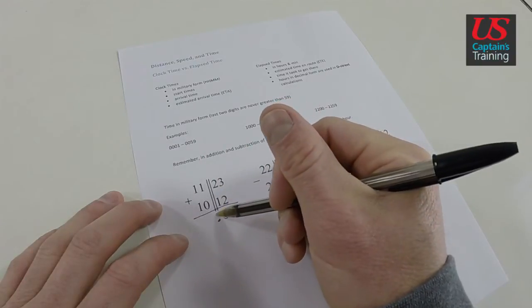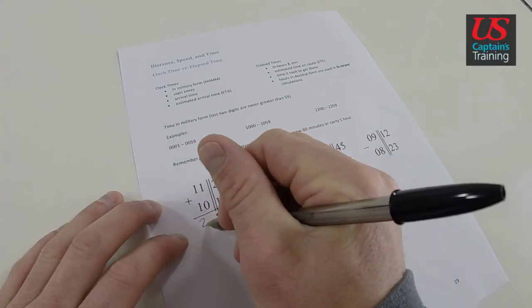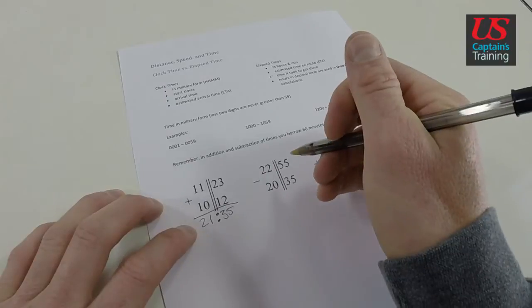Usually when we do time, we use these colons. And now 11 plus 10 is 21. Nice, clean, simple.